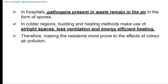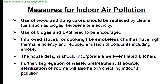In colder regions, airtight spaces with less ventilation make residents more prone to indoor air pollution effects. Measures include: replacing wood and dung cakes with biogas, kerosene, or electricity; encouraging biogas and LPG use; adopting smokeless chulas with high thermal efficiency; incorporating well-ventilated kitchens in house designs; and waste segregation, pretreatment at source, and sterilization of rooms.